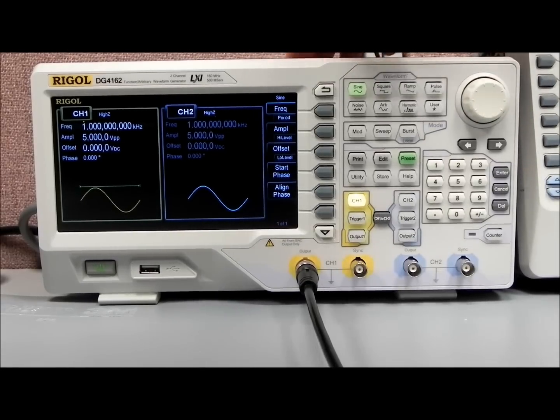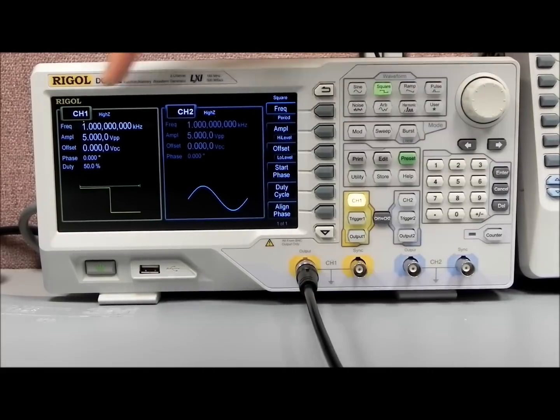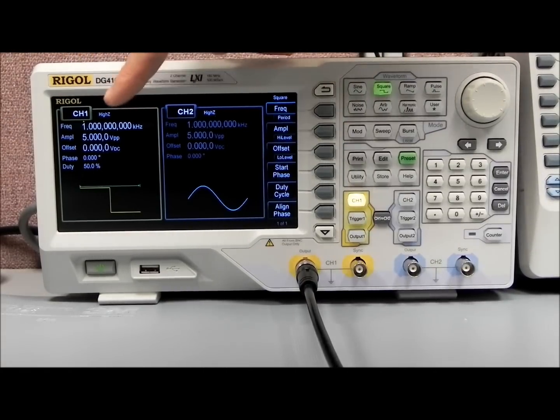So let's just take a look at entering some of the data. Let's pick a square wave, and you can see now we have frequency highlighted in channel 1.